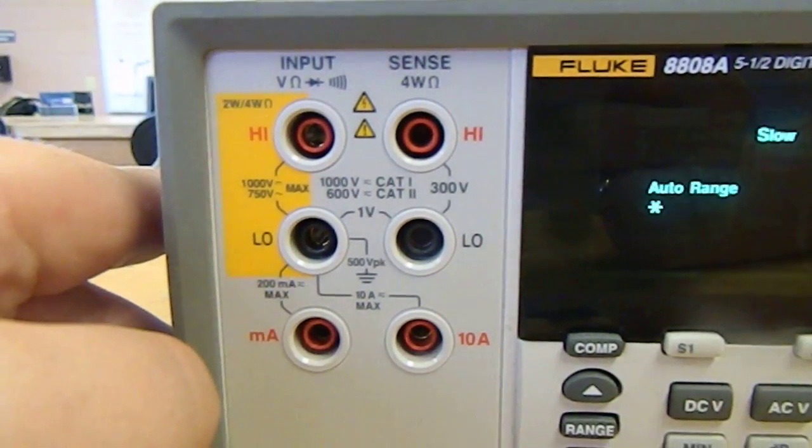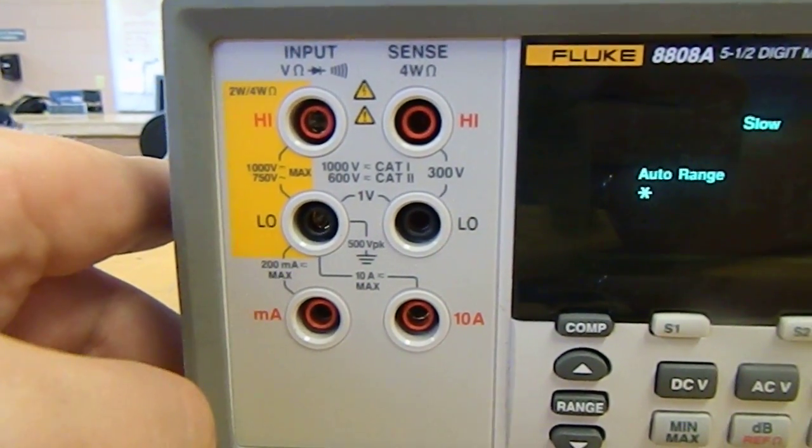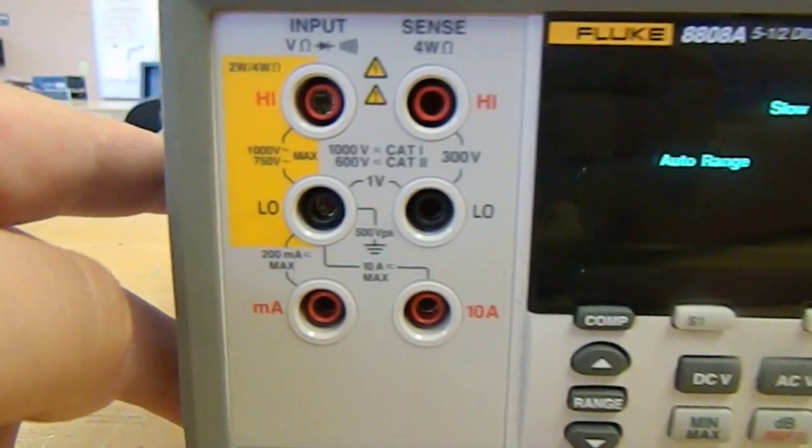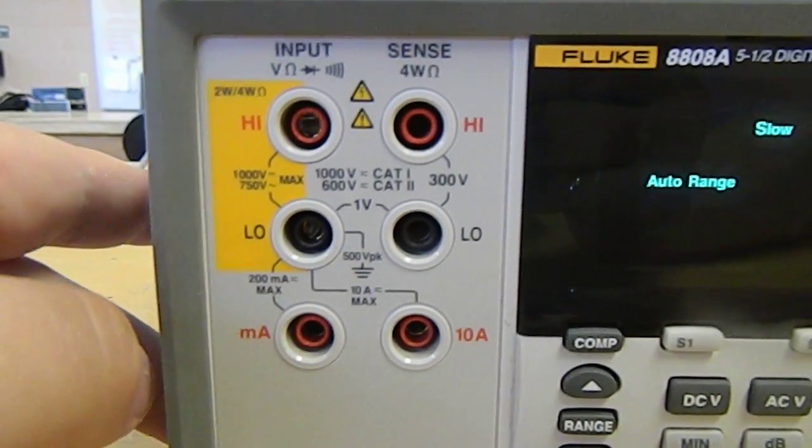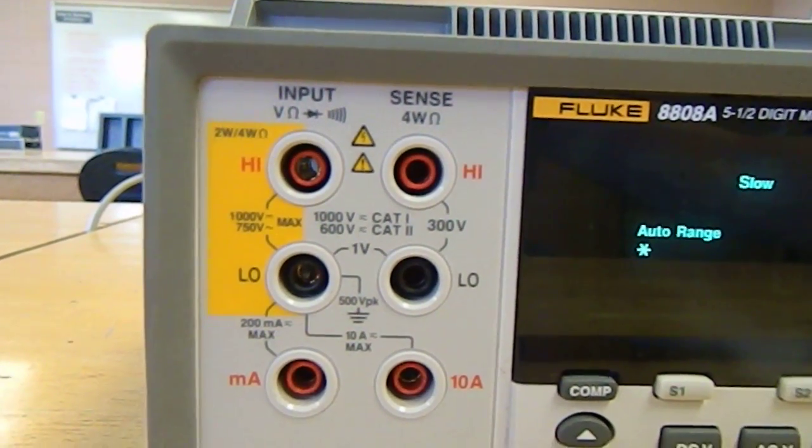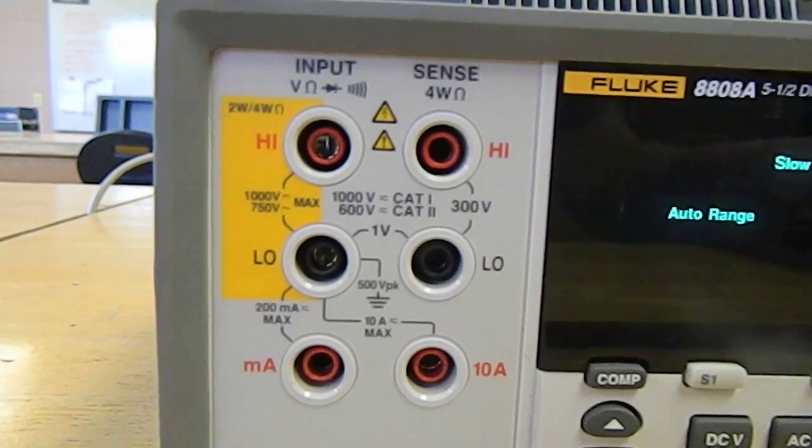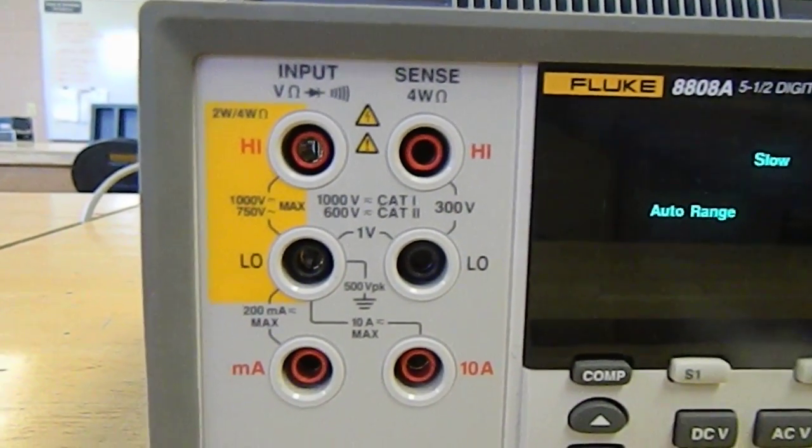Now, the tricky part to using a multimeter is simply deciding which place to connect your probes. If you read carefully, you can actually tell pretty closely what you need.